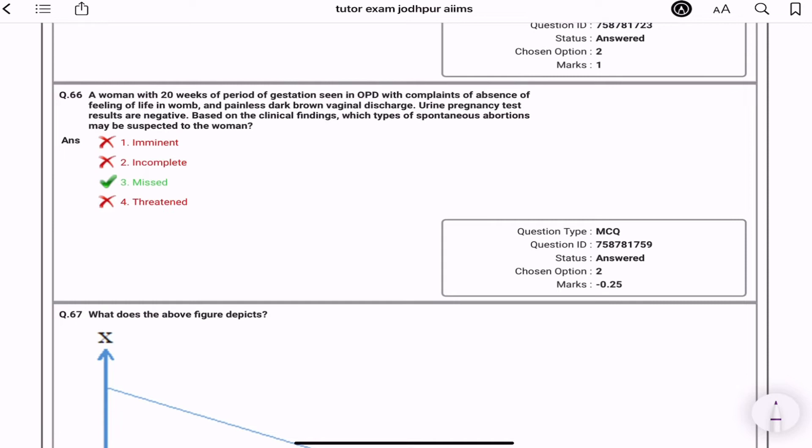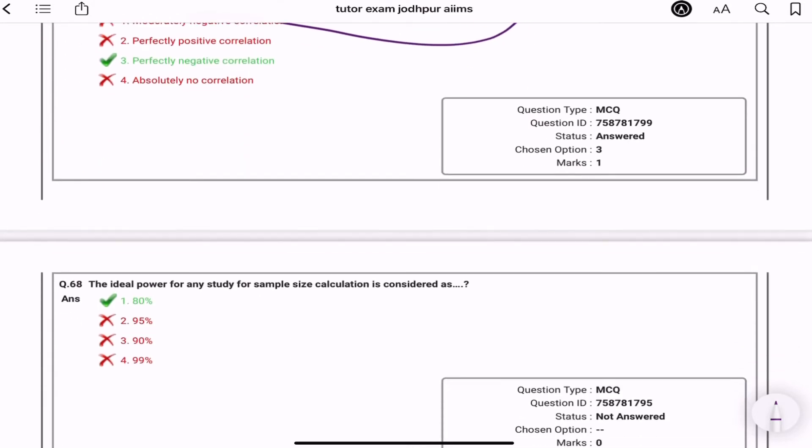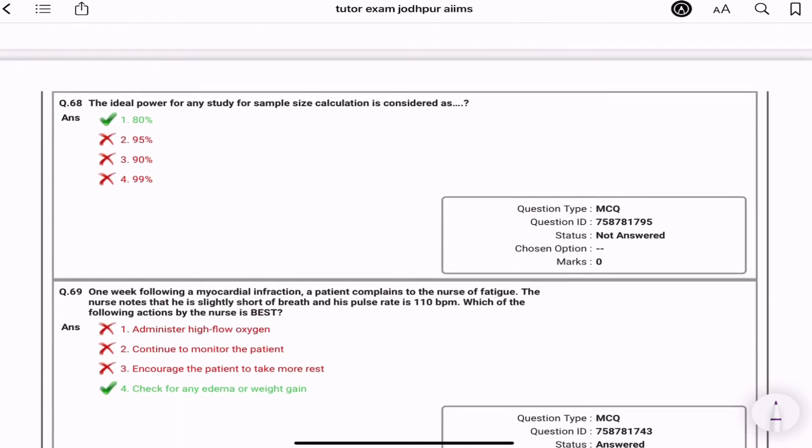A woman with 20 weeks of period of gestation seen in OPD with complaint of absence of feeling of life in womb, painless dark vaginal discharge, UPT is negative. Based on the clinical findings, which type of spontaneous abortion may be suspected in the woman? Missed. Because this is 20 weeks of gestation, absence of feeling life, painless dark vaginal discharge, UPT is negative. Based on this, it is missed abortion. This is a graph because it is negative but it is perfectly negative with the time it is decreasing. Then ideal power for study for sample size calculation is considered as 80%.